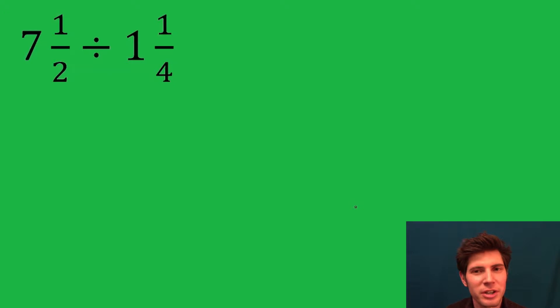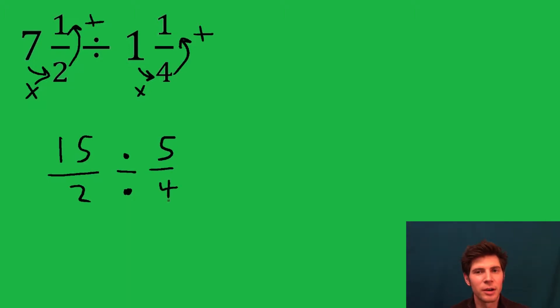First thing you want to do is make these improper fractions. We're going to multiply 7 times 2 and then add 1. So 7 times 2 is 14 plus 1 is 15, and it's still over 2 divided by. Then we do 1 times 4 add the 1, that gives us 1 times 4 is 4 plus 1 is 5 over 4. Now we've changed our mixed numbers into improper fractions.